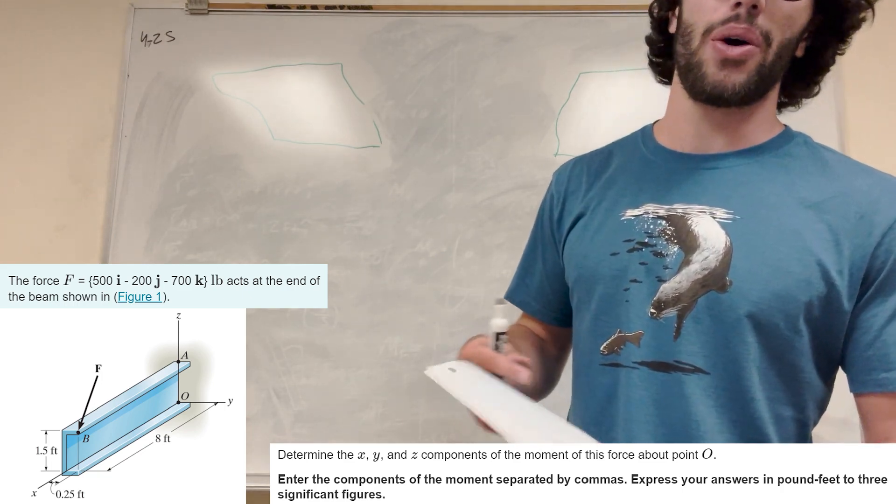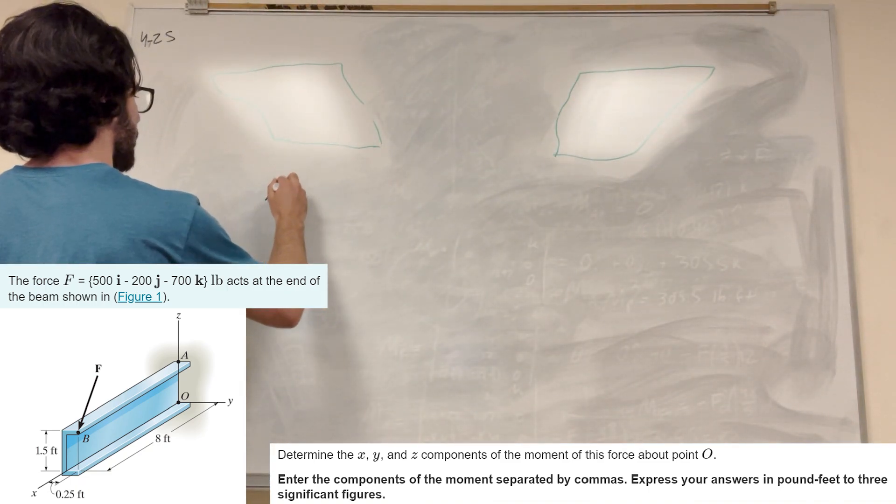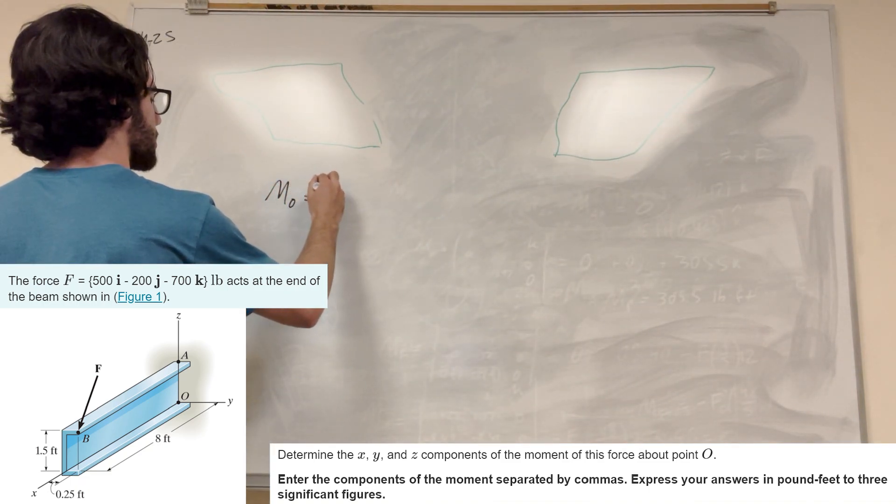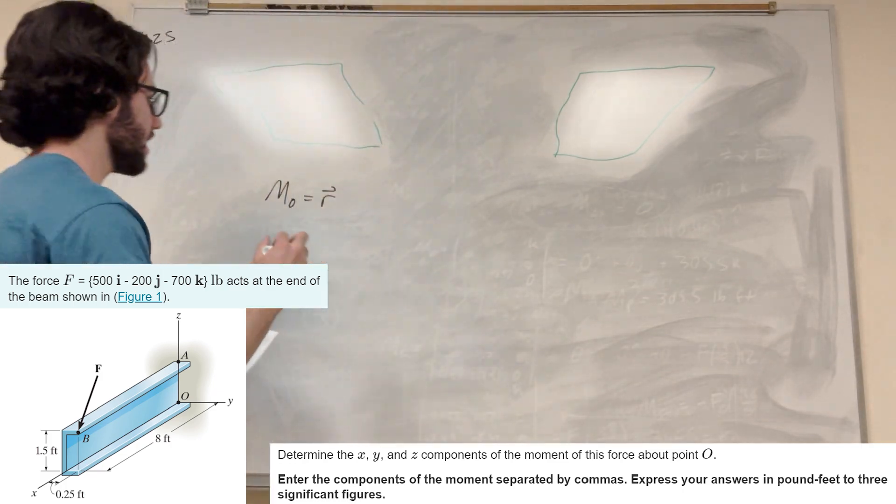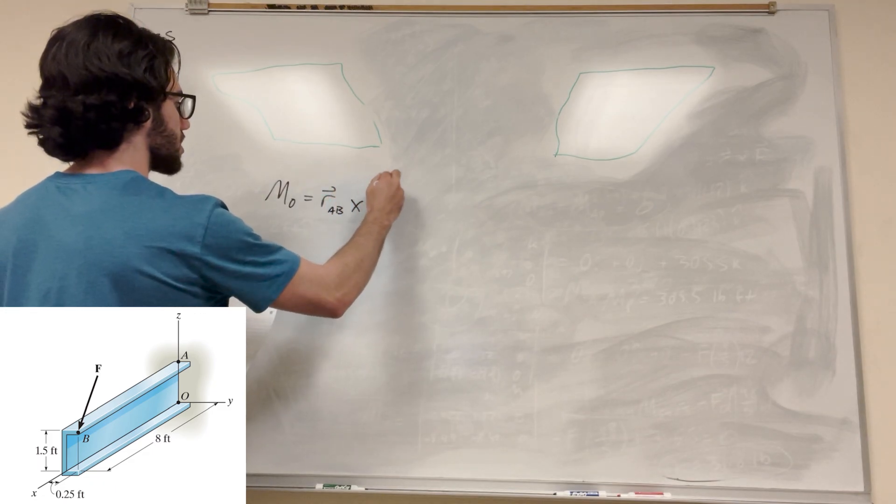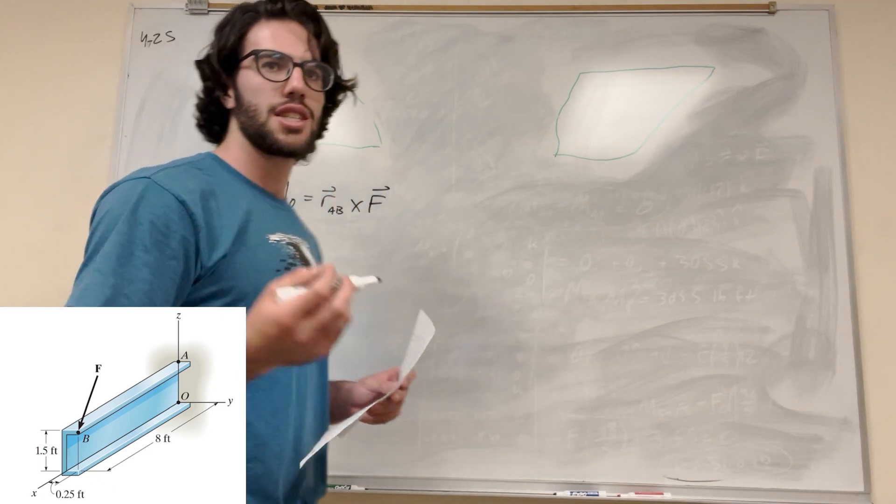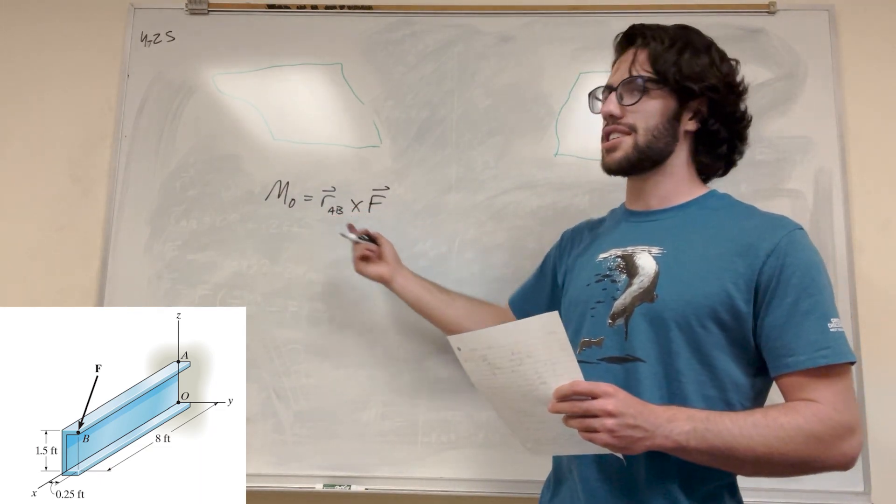So we know that the moment around point O is equal to the position vector to where it's pointing out. We're looking at point B, so the position vector from A to B crossed with the force as a vector. We have force as a vector, we found that already, but we need to find this position vector A to B.